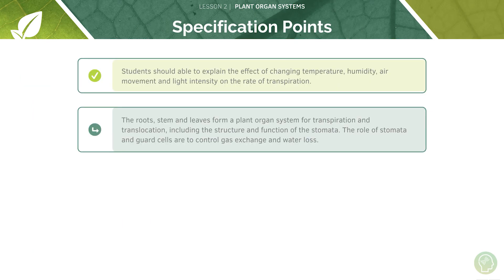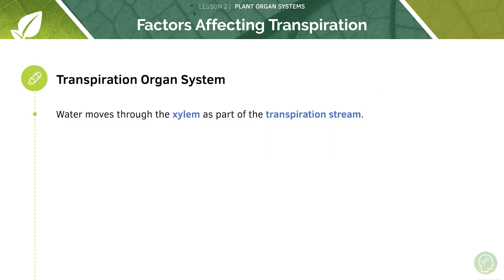Now let's look at the roots, stem and leaves that form the plant organ system for transpiration, and also at the stomata. Water moves through the xylem as part of the transpiration stream. The xylem allows for the movement of water and mineral ions, while the phloem allows for the movement of nutrients such as amino acids and glucose.